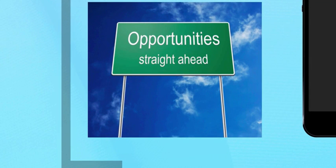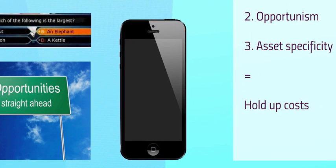Bounded rationality actually means contracts are incomplete. Now there's something called opportunism — people try to exploit these gaps even if it makes somebody else worse off. Finally, there's something called asset specificity. So let's take the example of the iPhone: their casing needs to be tailor-made for them. So Apple will go to a company and ask them to change how they're producing their goods so that it suits the iPhone.